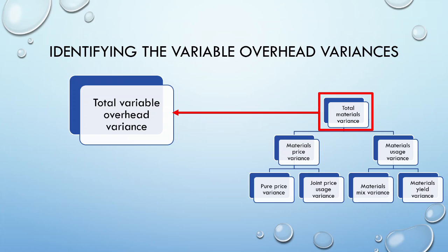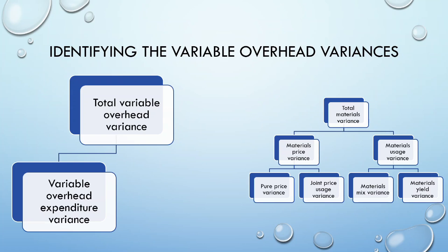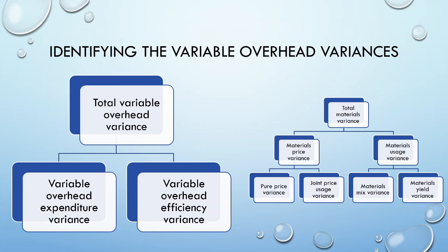We then get our variable overhead expenditure variance, which arises when the actual expenditure differs from the standard expenditure. In essence, this variance is the same as our material price variance. Next, we have our variable overhead efficiency variance, which considers how much of the cost driver we actually worked compared to how much of the cost driver we should have worked. This follows the same principle as our material usage variance.